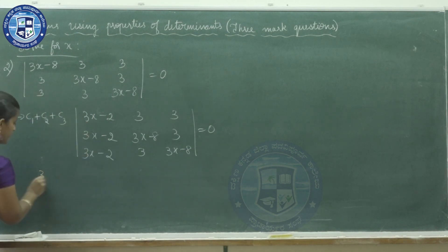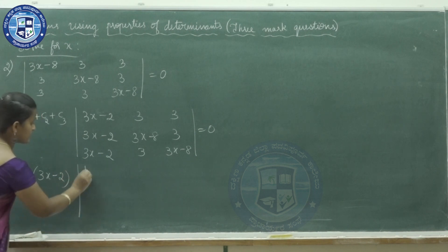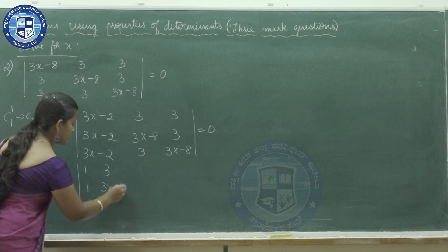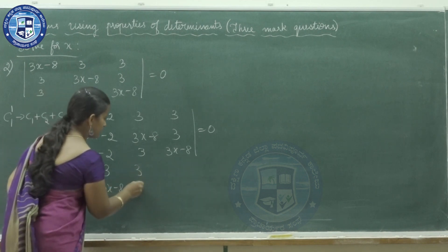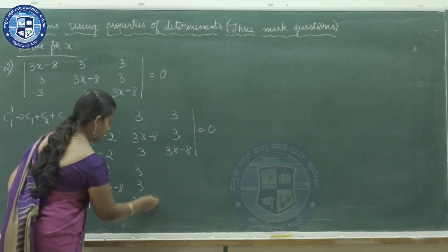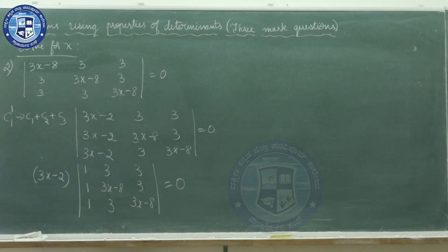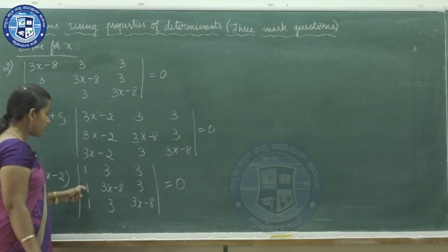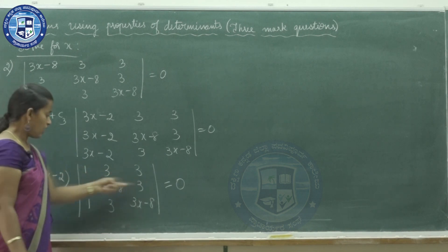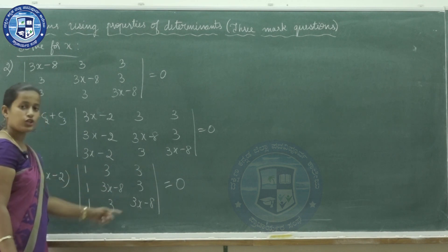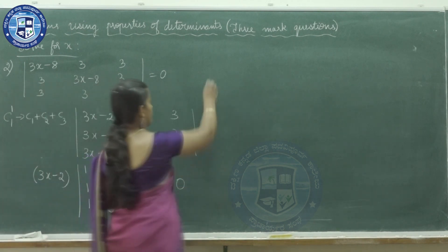Take out 3x−2 from the first column. What remains is: 1, 3, 3; 1, 3x−8, 3; 1, 3, 3x−8. Now to bring in as many zeros as possible, we observe the first entries are 1, 1, 1 and the middle entries are 3, 3, so we use R2 minus R1 and R3 minus R1.